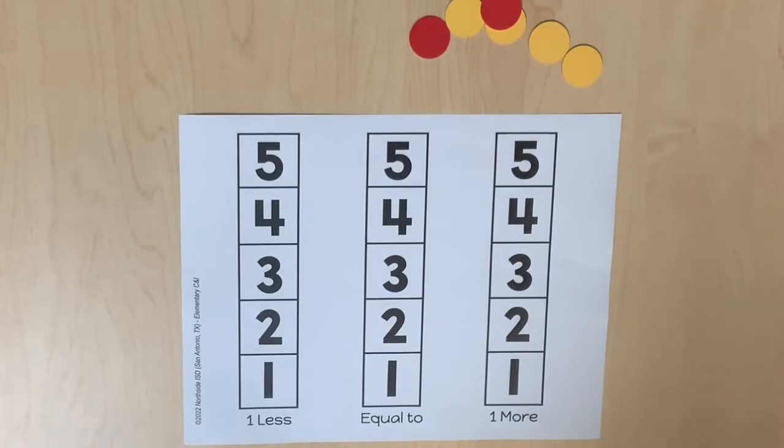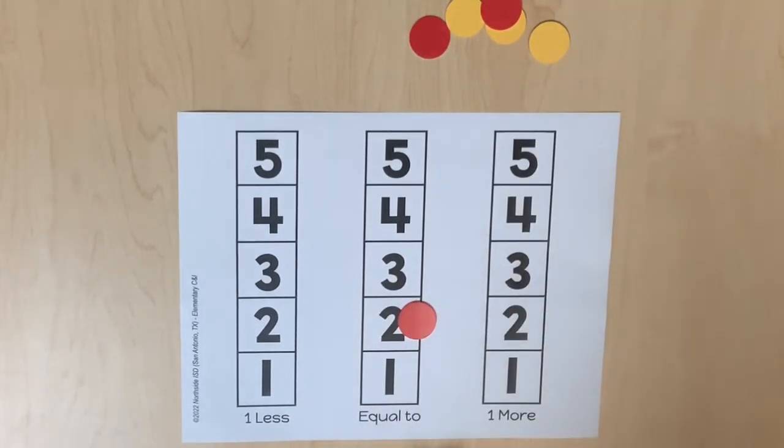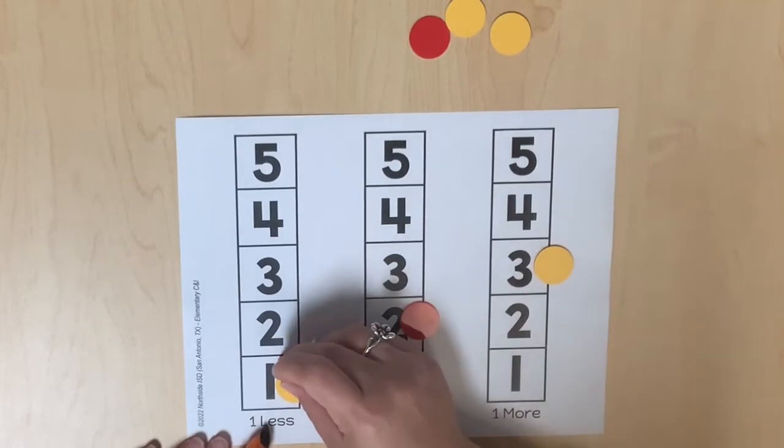Students can also use the number path to generate numbers that are one more than or one less than a given number. Using three vertical number paths, students can locate a number such as two on their middle number path. Then using colored counters, students can identify a number that is one more than and one less than two. So one more than two would be three. One less than two would be one.